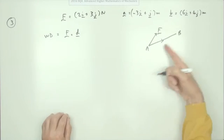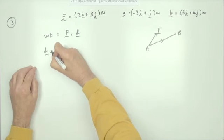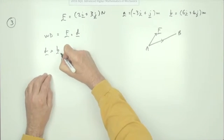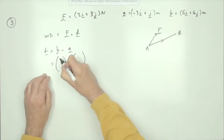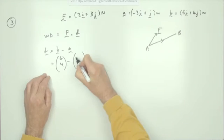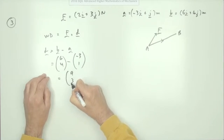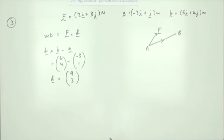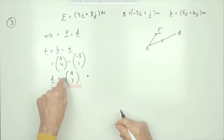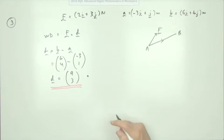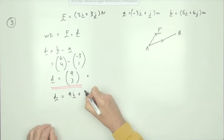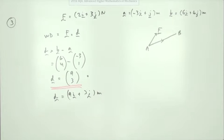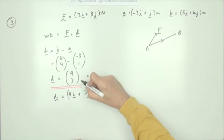The first step is to find the displacement. The displacement D would be B minus A, which is (6, 4) take away (-3, 1), so that comes to (9, 3). That was a mark — in the marking scheme the mark was for writing it this way, rather than having to write D equals 9i plus 3j meters, although perhaps I should include the meters unit.